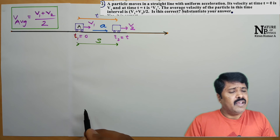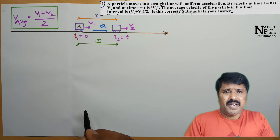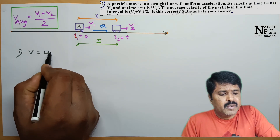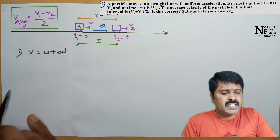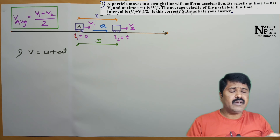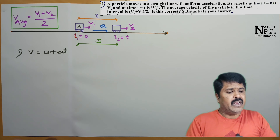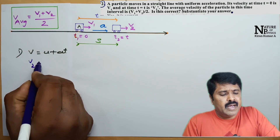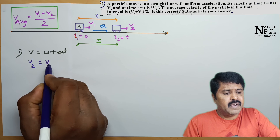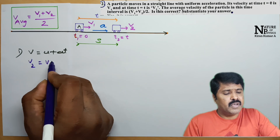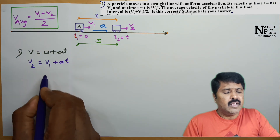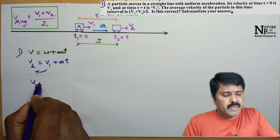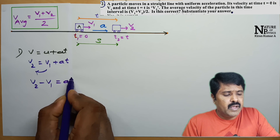To prove this, I am going to use two kinematic equations. The first one is V is equal to U plus A times T, which is the basic formula. Replacing the values: final velocity is V2 and initial velocity is V1. So we get V2 equals V1 plus A T. Rearranging, V2 minus V1 is equal to A T — this is equation number 1.